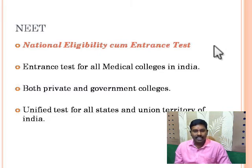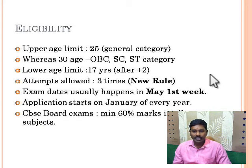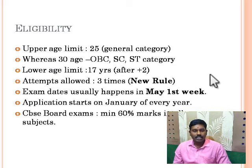What is the eligibility? In order to attend the exam, the person should have passed 12th standard. The minimum age is 17 years and the upper age limit is 25. There will be a relaxation for OBC, SC, and ST candidates — up to 30 years of age. Regarding attempts, only three attempts are allowed. This is a new rule; before, you could attend any number of times within the upper age limit.